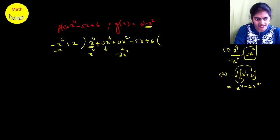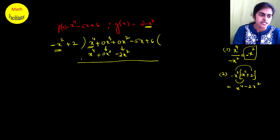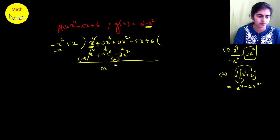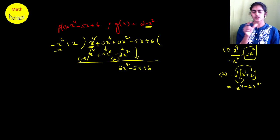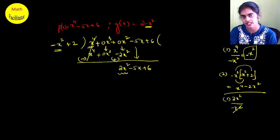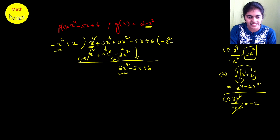Subtract: x⁴ cancels, the x³ term is 0 so ignore it, and 0·x² - (-2x²) = +2x². Bring down the remaining terms -5x and +6. The new dividend is 2x² - 5x + 6. Step one again: 2x² divided by -x² gives -2. Write -2 as the next term in the quotient, so the quotient so far is -x² - 2.